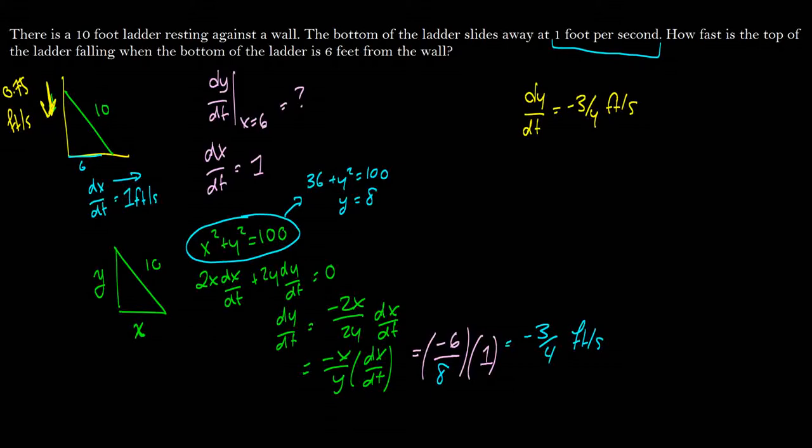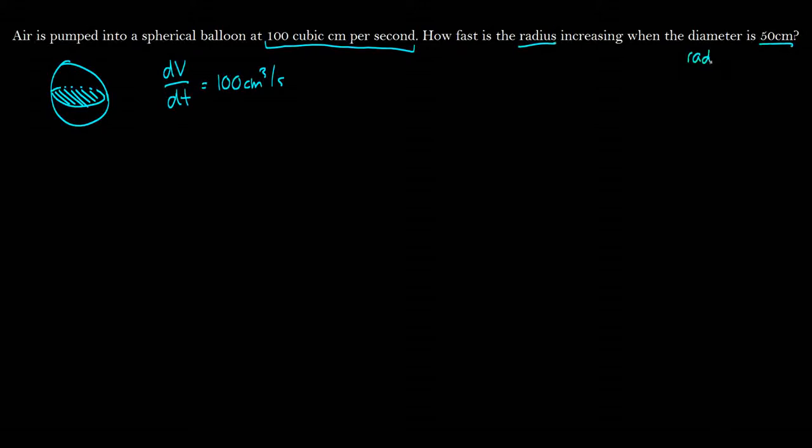So I'm going to show you another example that has to do with shapes. So we have air being pumped into a spherical balloon. Okay, here is my lovely spherical balloon. We'll draw a little cross section just so you know it's spherical. And it's being blown up at 100 cubic centimeters per second. So that's the same thing as saying the volume is increasing by 100 centimeters cubed per second.